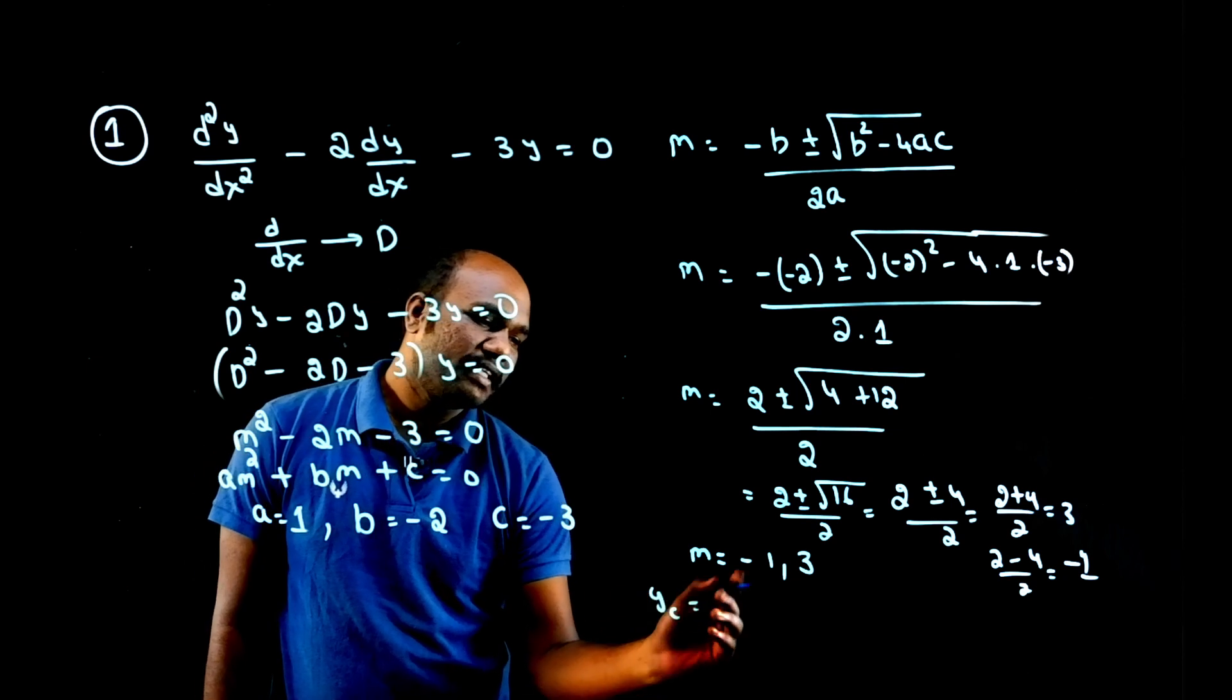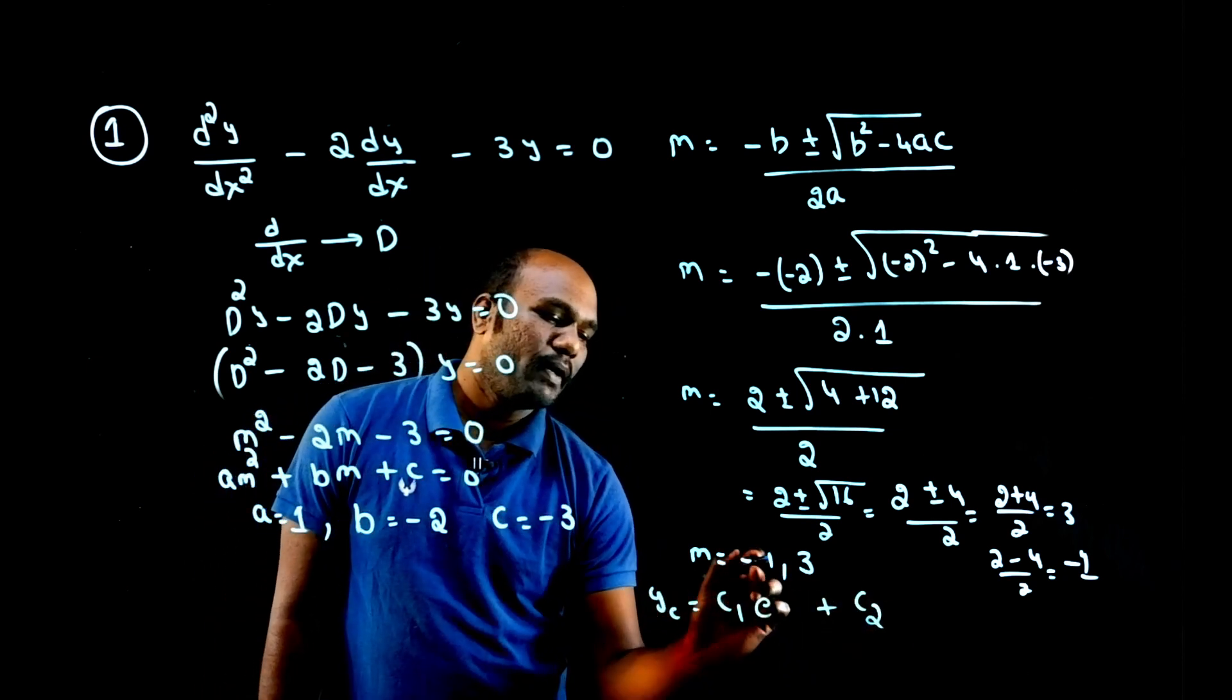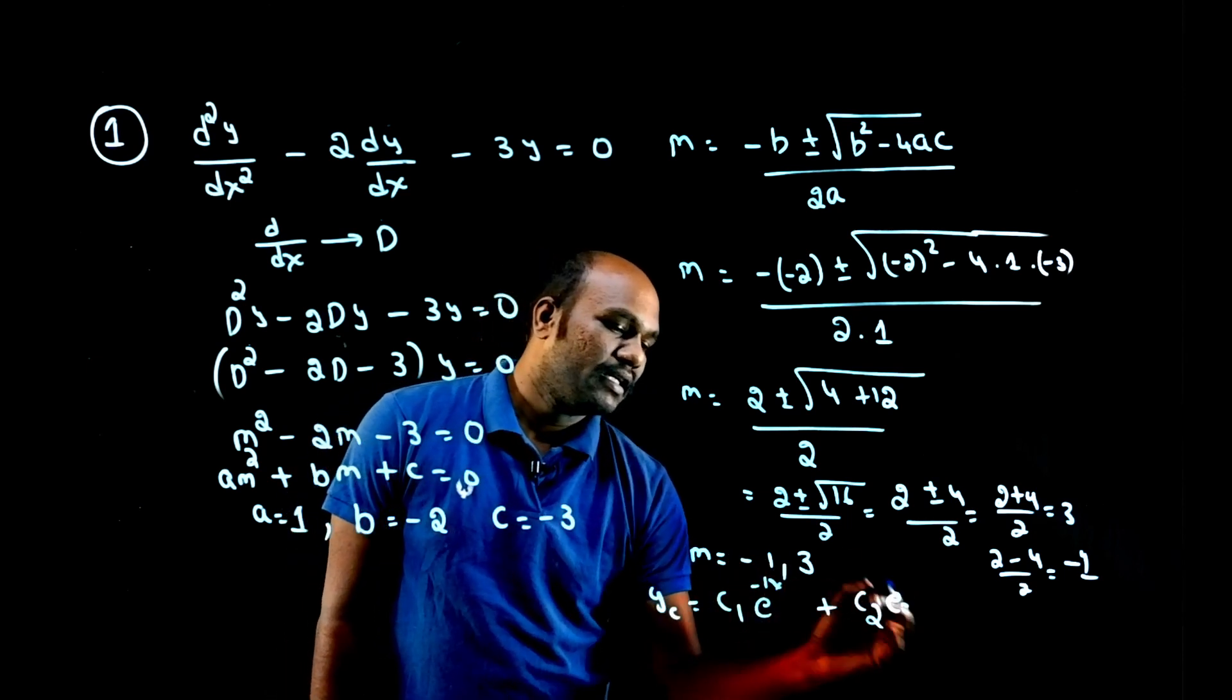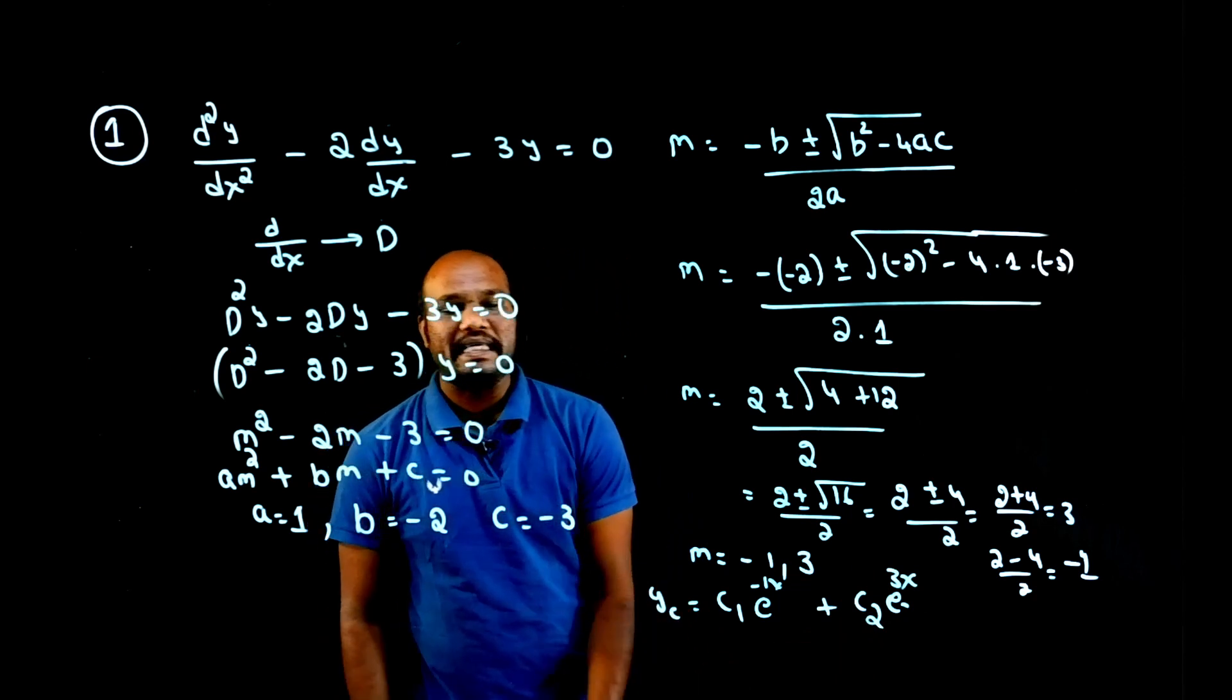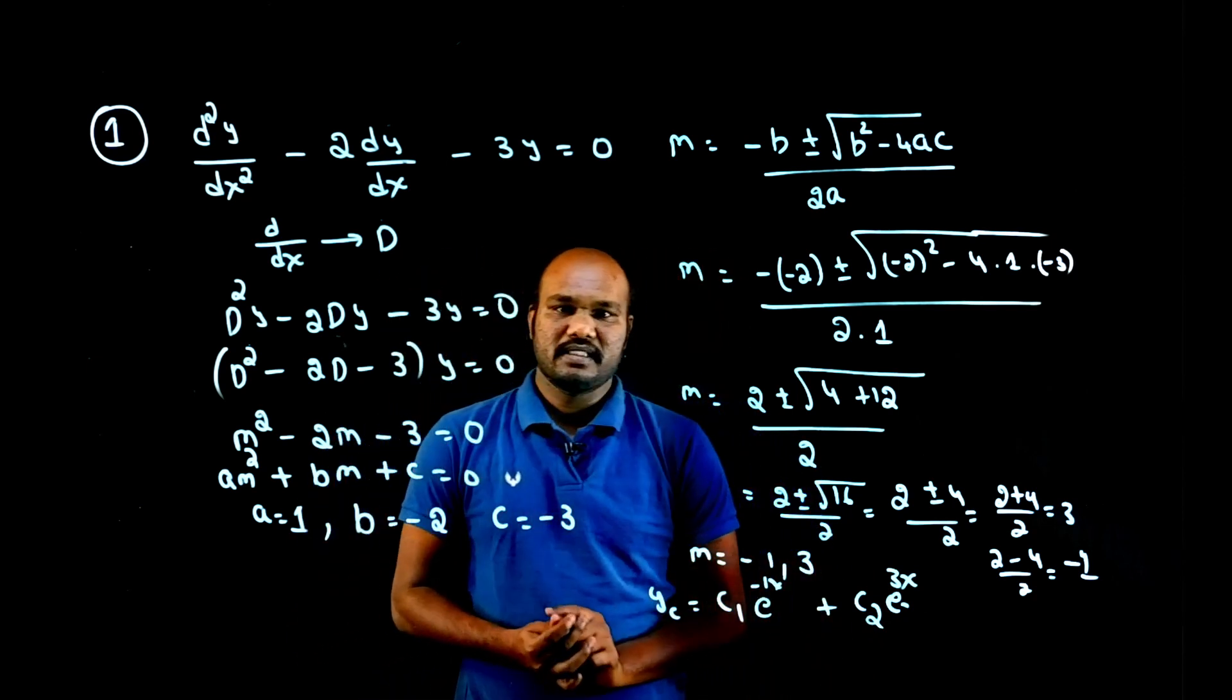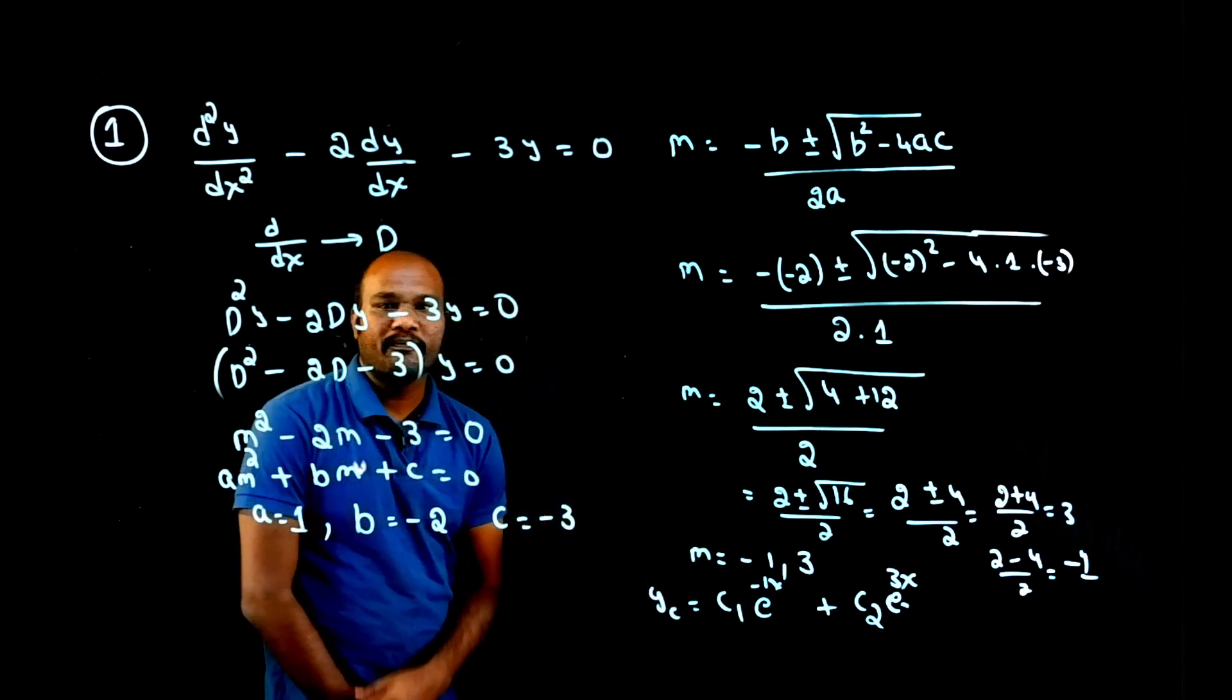To write YC, what do we need to do? How many roots are there? Two roots are there. C1 e power this number into x, plus C2 e power this number into x, that is 3x. This is YC, the complementary solution of this question. Is that simple? Is that simple, yes or no? Yes. This is the kind of node. It's very simple.